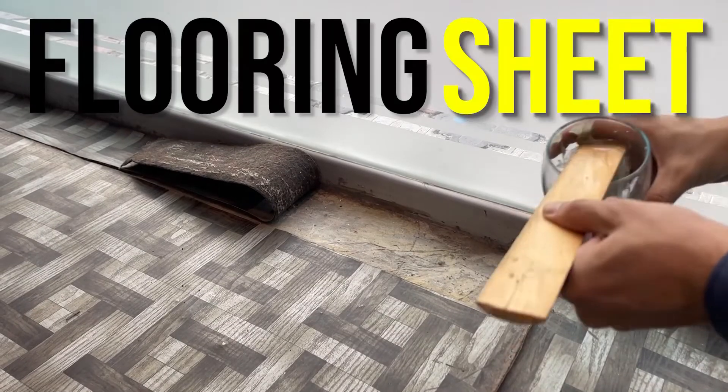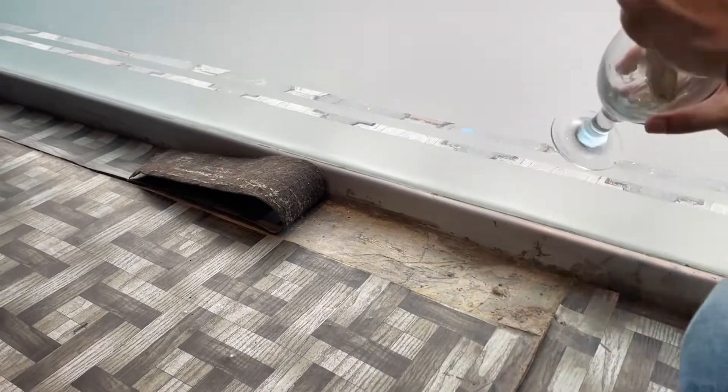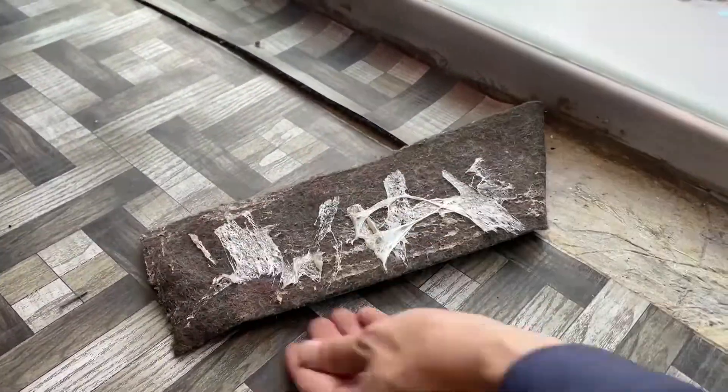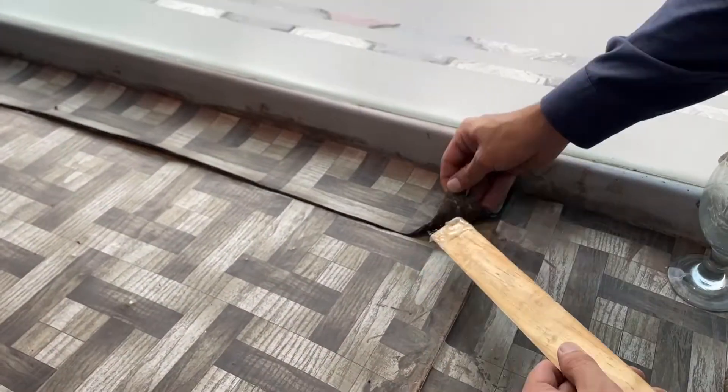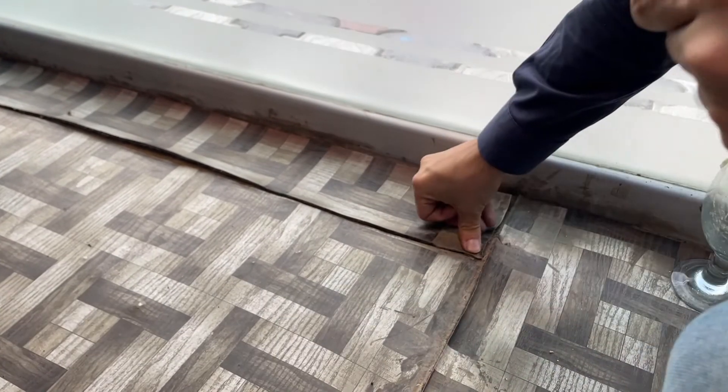To fix the flooring sheet, apply magic glue both on the floor and the flooring sheet. Attach the sheet to the floor by pressing it. It gets fixed too.